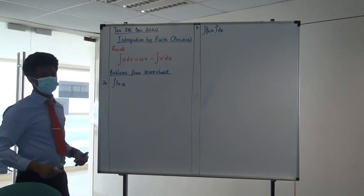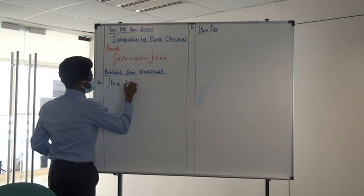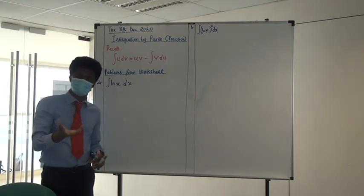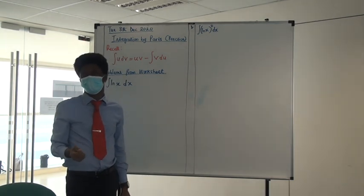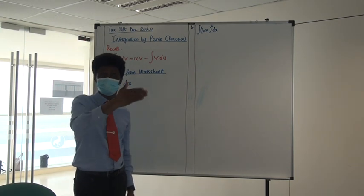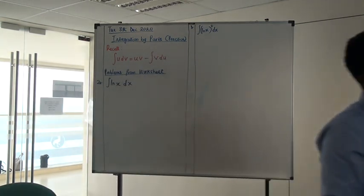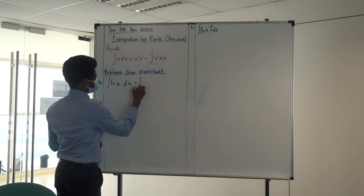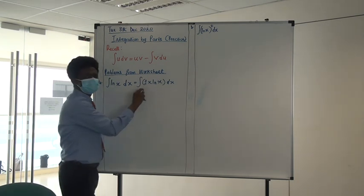I've seen some of the attempts made by different people, and I think for this first two you guys have really done it. But let's be together — sometimes you have a situation where it's difficult. One of the best things to do is to try both ways. On the worksheet, the instruction has been given: write ln(x) as 1 times ln(x). There's a reason for that — this is 1 times ln(x) dx, so that's the product.